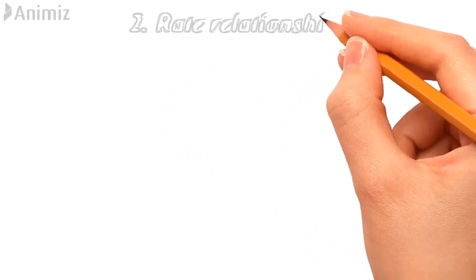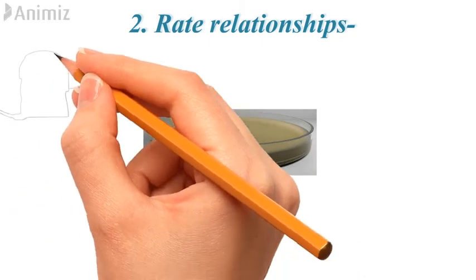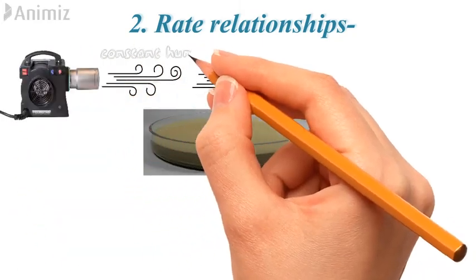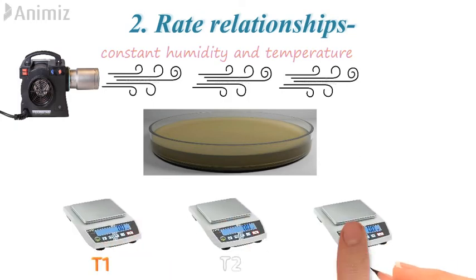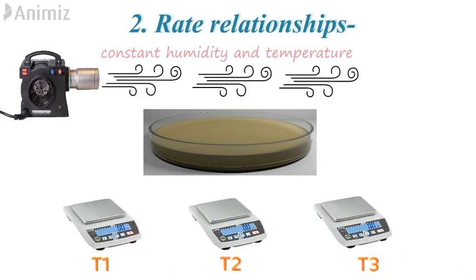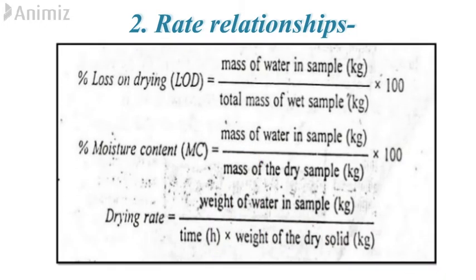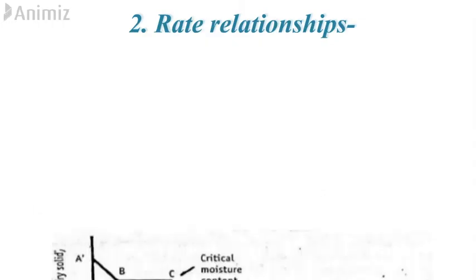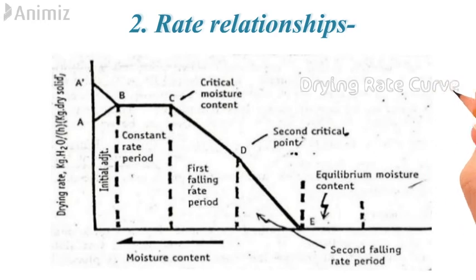The second theory is called the rate relationships. In this theory, a wet mass is dried by passing air of constant humidity and temperature, and the difference in weight is determined at different time intervals. Using these observations, %LOD, %MoC, and drying rate are calculated using specific formulas, and a graph called the drying rate curve is plotted.